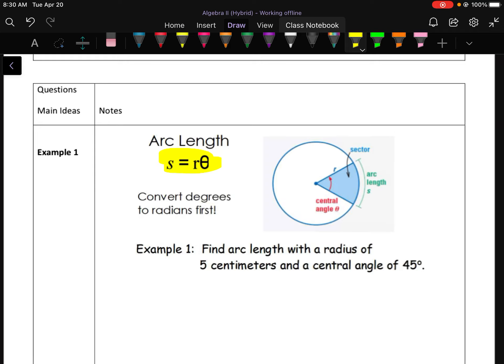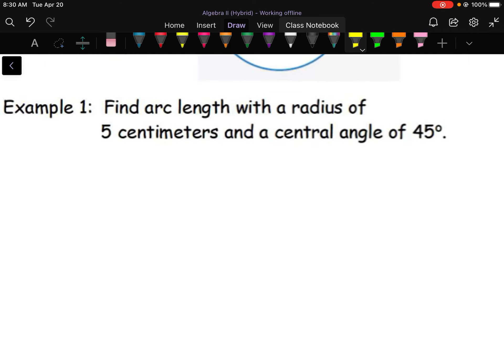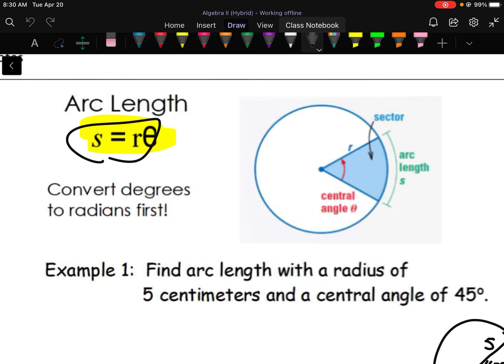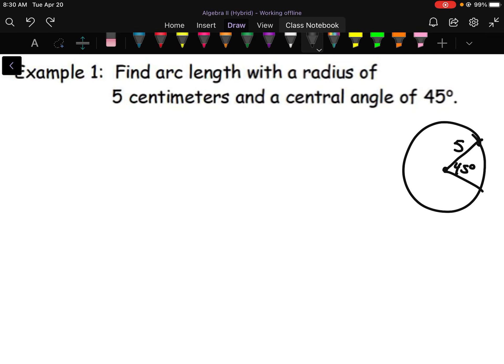So example number one here says find the arc length with a radius of 5 centimeters and a central angle of 45°. So if you want, you can go ahead and draw yourself a picture. 45 degrees central angle, my radius is 5. So in order to use S equals my radius times my angle, I need to convert my angle to radians first. So we'll take 45 times, I'll put 45 over 1, 45 times π over 180. So if we reduce, we can divide both 45 and 180 by 45. So 45 divided by 45 is 1, 180 divided by 45 is 4. So 45 degrees would convert to π over 4 radians.